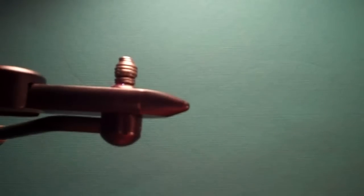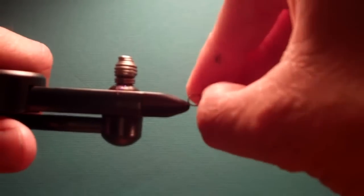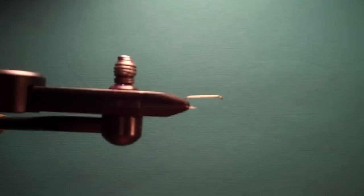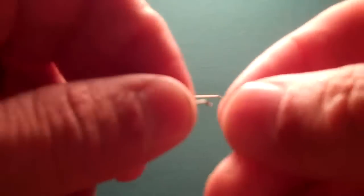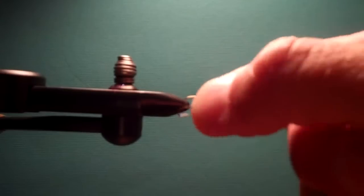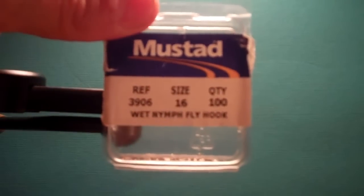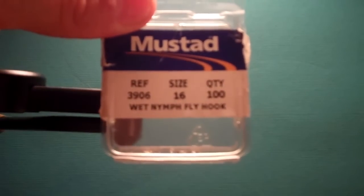I am using a size 14 muddler or stonefly hook at the moment. Normally, if you were doing this, you would use a size 18 or 20 hook, something like this. I can't even pick it up, it's so tiny. If I were to be tying these for fishing and not for filming purposes, I would use these Mustad size 16 wet nymph hook.